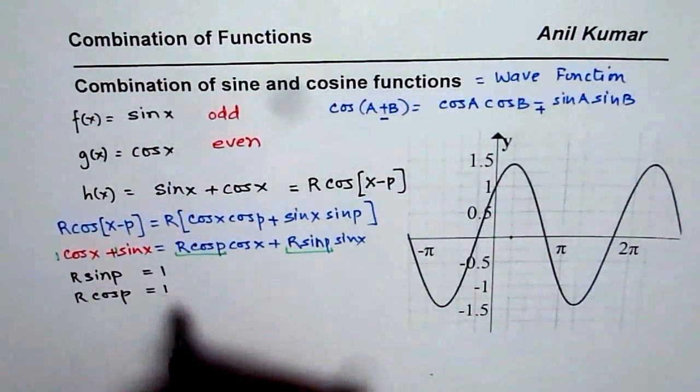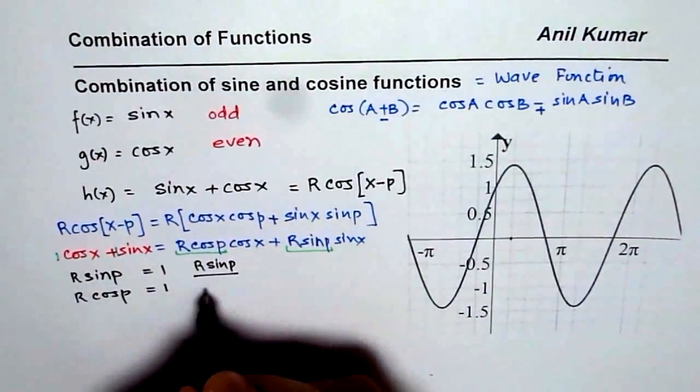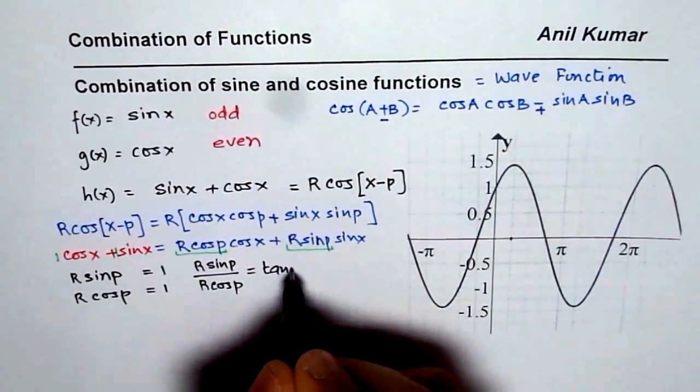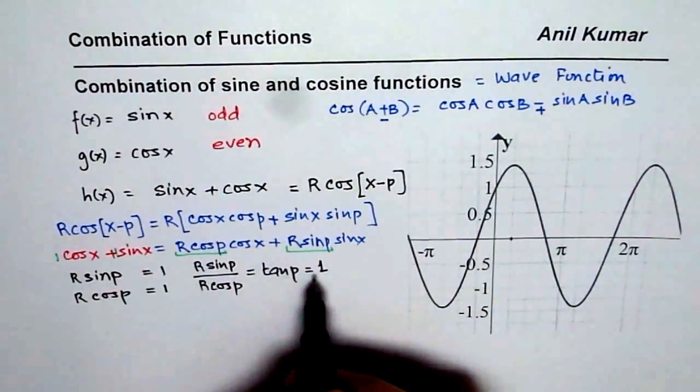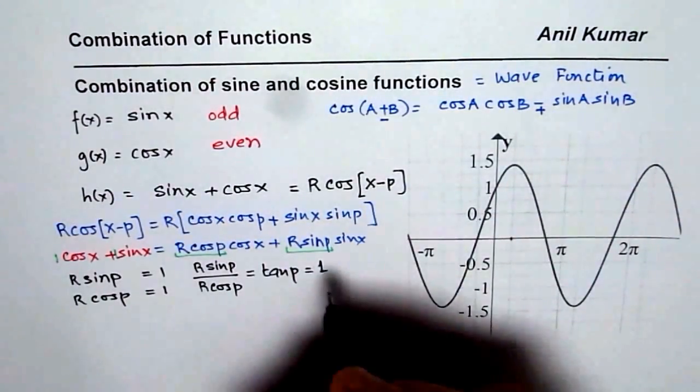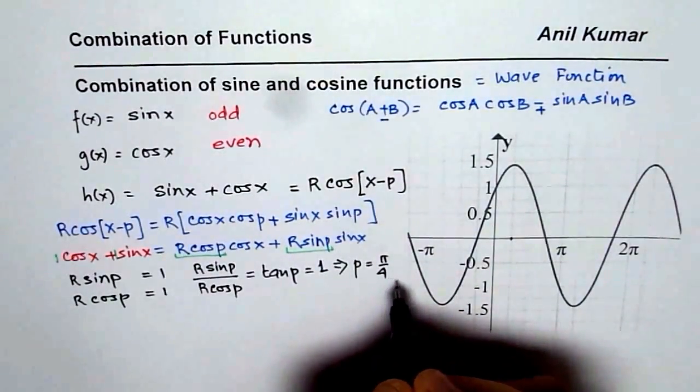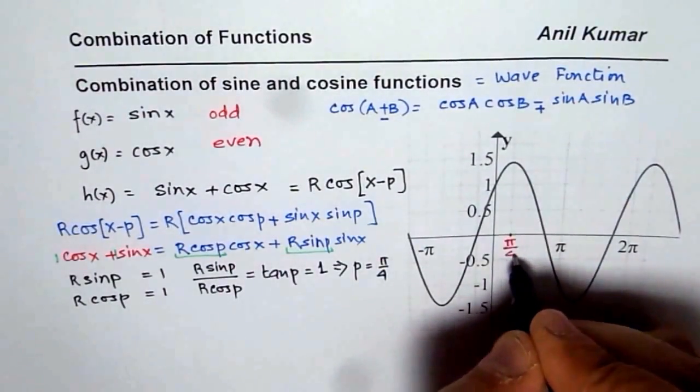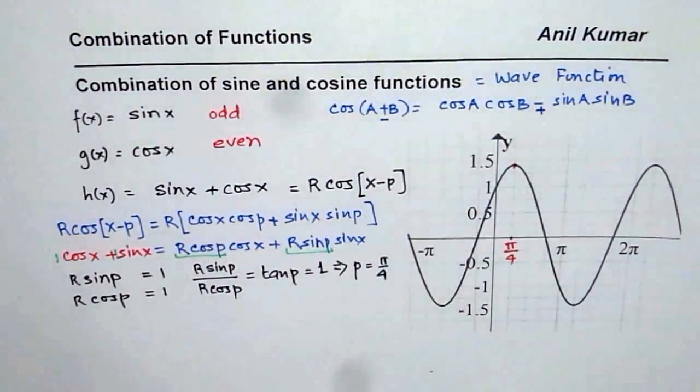So if I divide one by the other, that means R sine p divided by R cos p will be equal to, this of course is tan p. Tan p is equal to 1 divided by 1 is 1. And when is tan p 1? Tan p is 1, tan inverse of 1, 45 degrees or π/4. So that gives us p equals π/4. You get the idea. So we exactly calculated the phase shift and which, as per my sketch, is indeed π/4. So we get p as π/4.